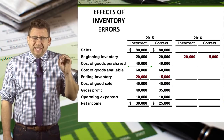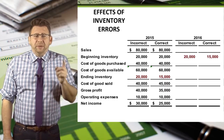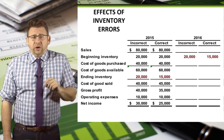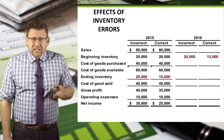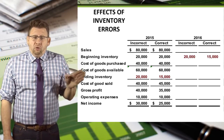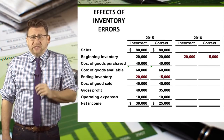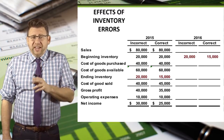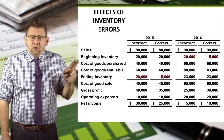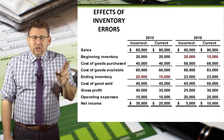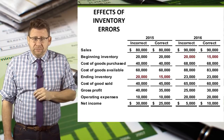The reason inventory errors reverse is because the ending inventory in one year becomes the beginning inventory in the next year. In this case, the 2015 overstated ending inventory becomes 2016's overstated beginning inventory, so 2016 goods available for sale are overstated by $5,000.